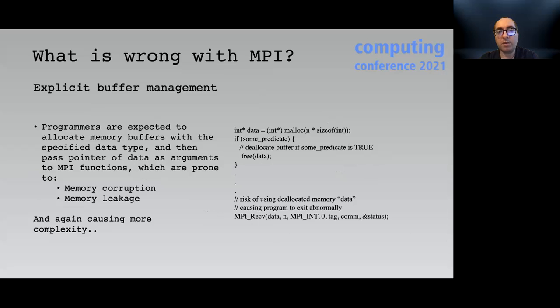Secondly, buffer management is a fundamental aspect of MPI programming in C and Fortran that programmers have been expected to allocate memory buffers with the specified data type and then pass the pointers of buffers as arguments to the MPI collective and point-to-point parameters. Such memory management methods are prone to memory corruption and memory leakage when not managed properly.